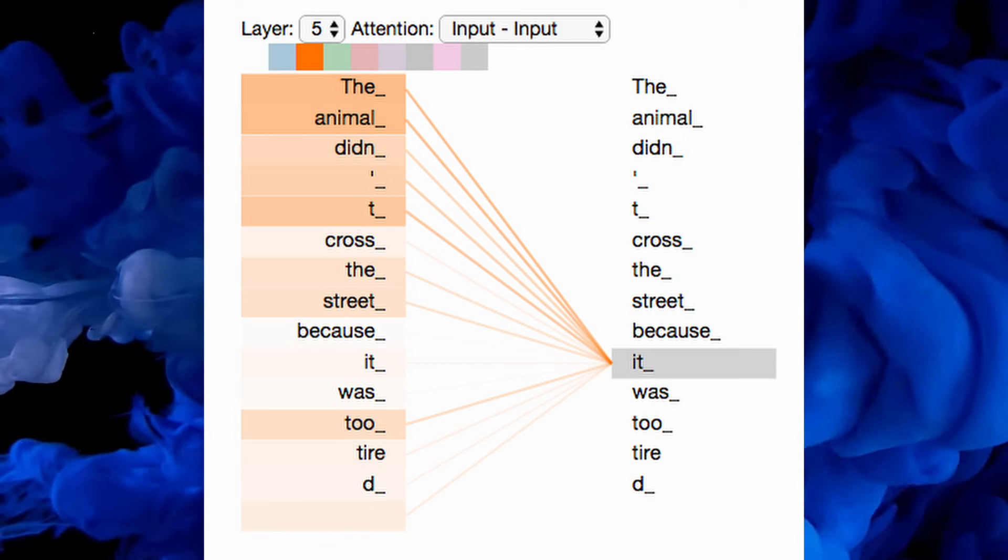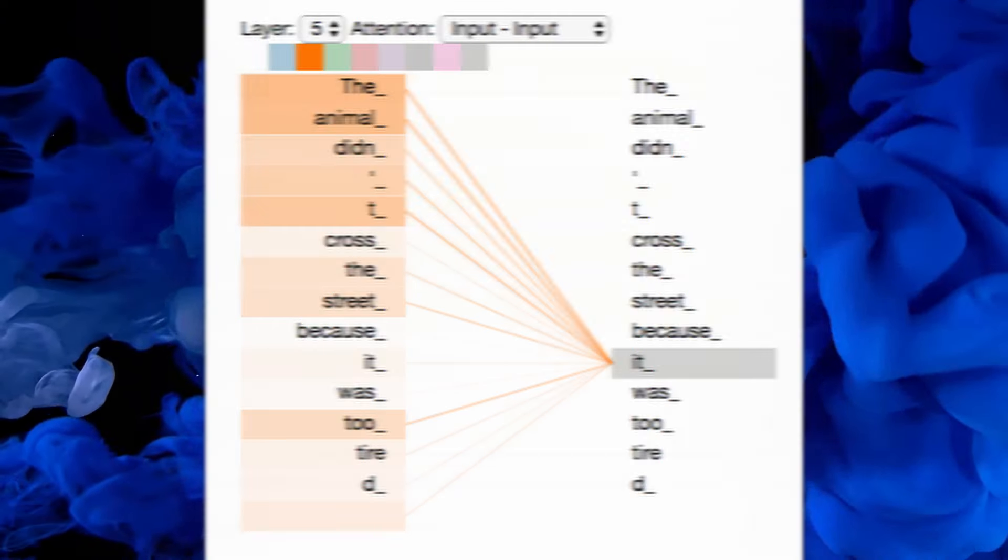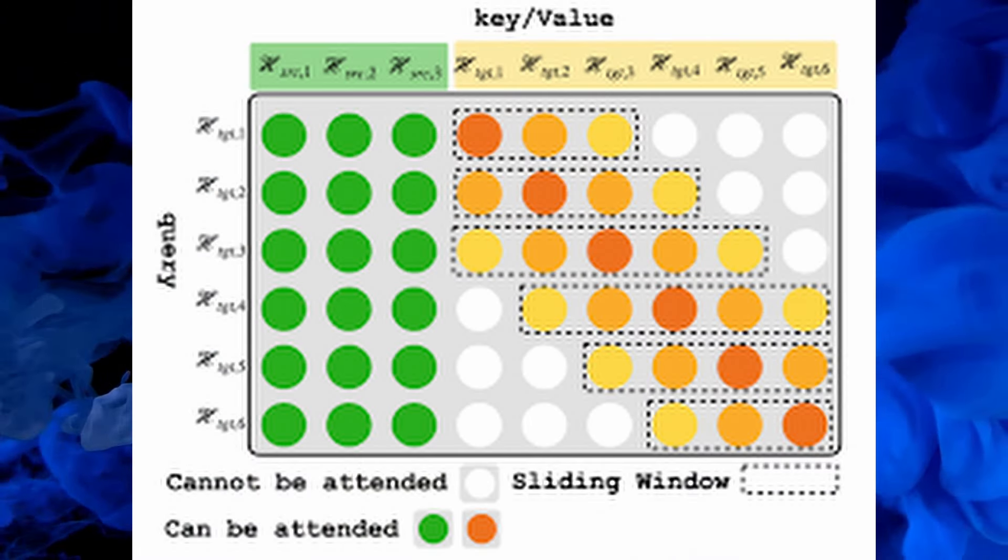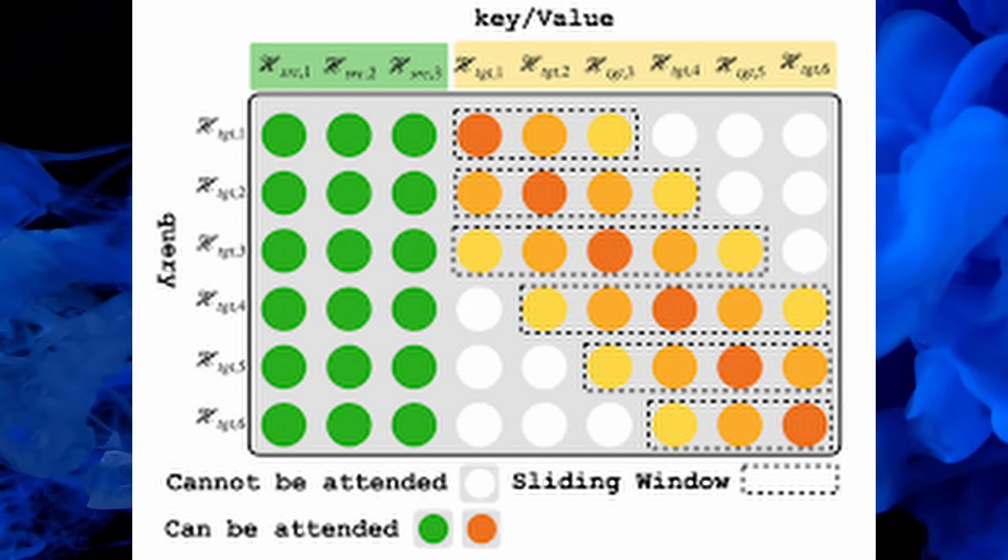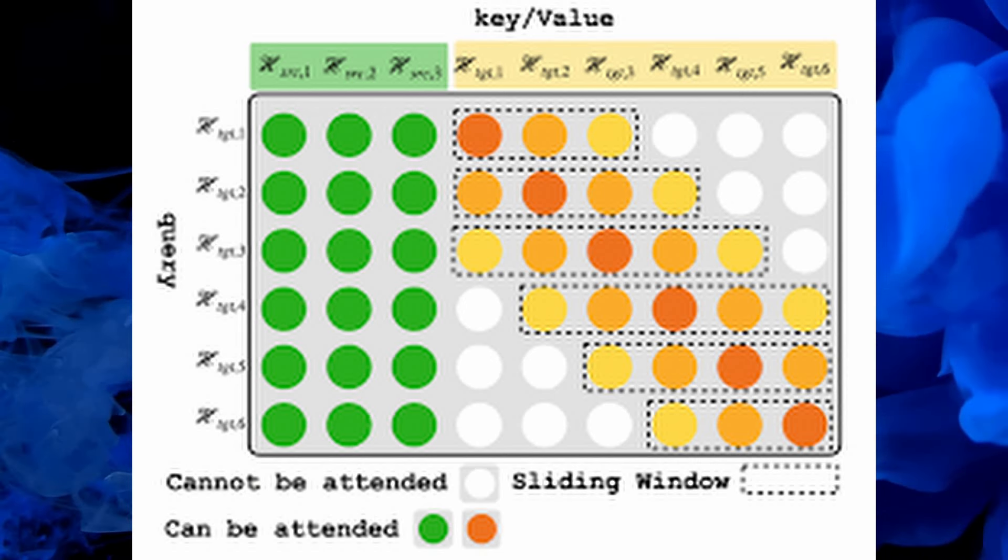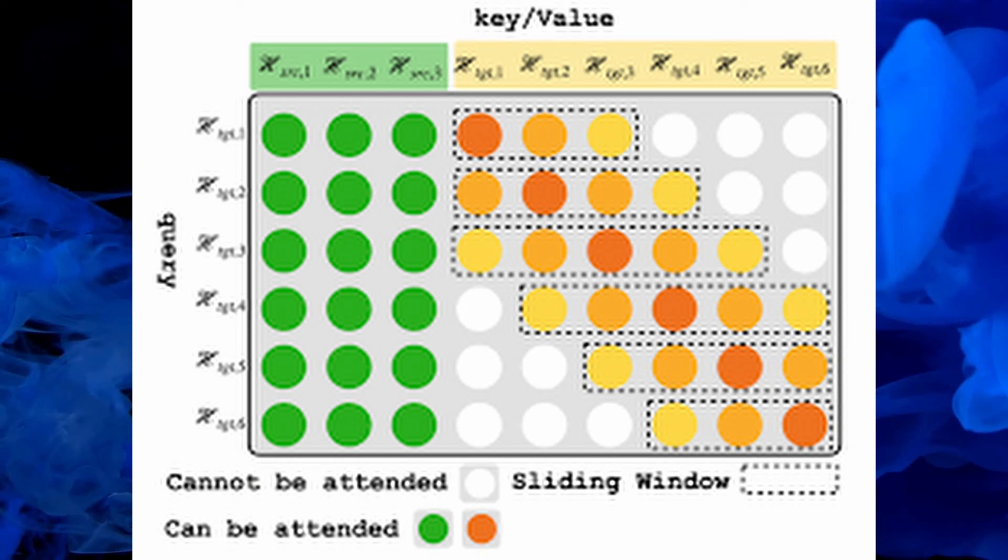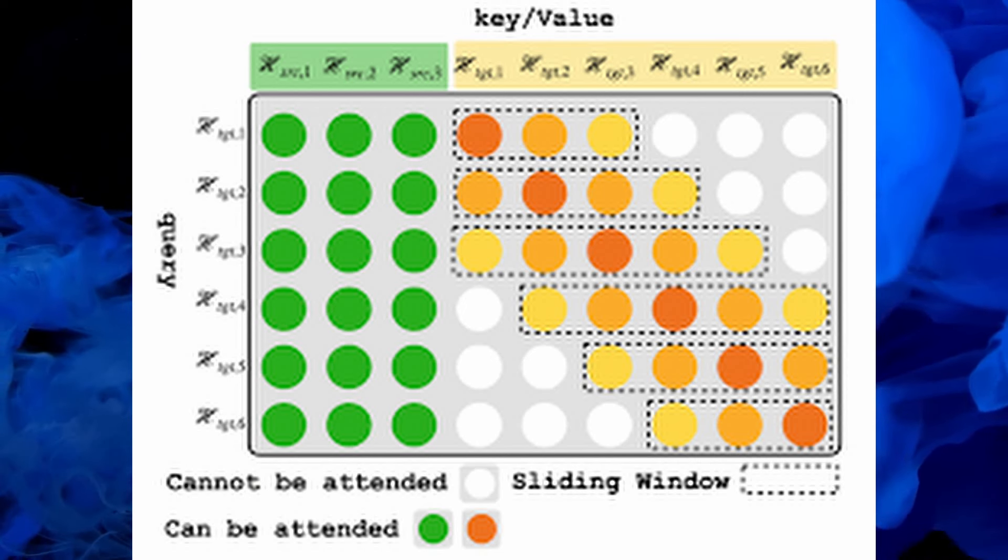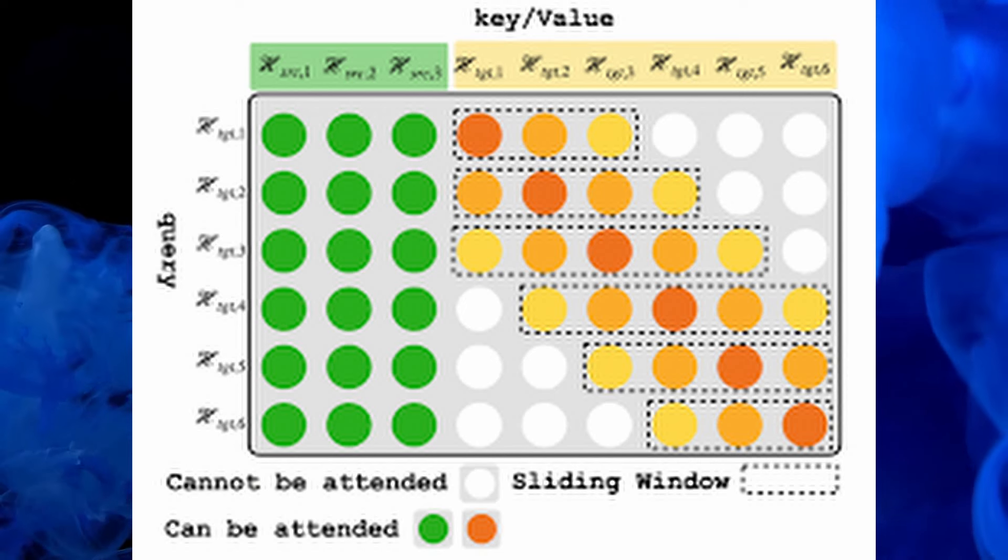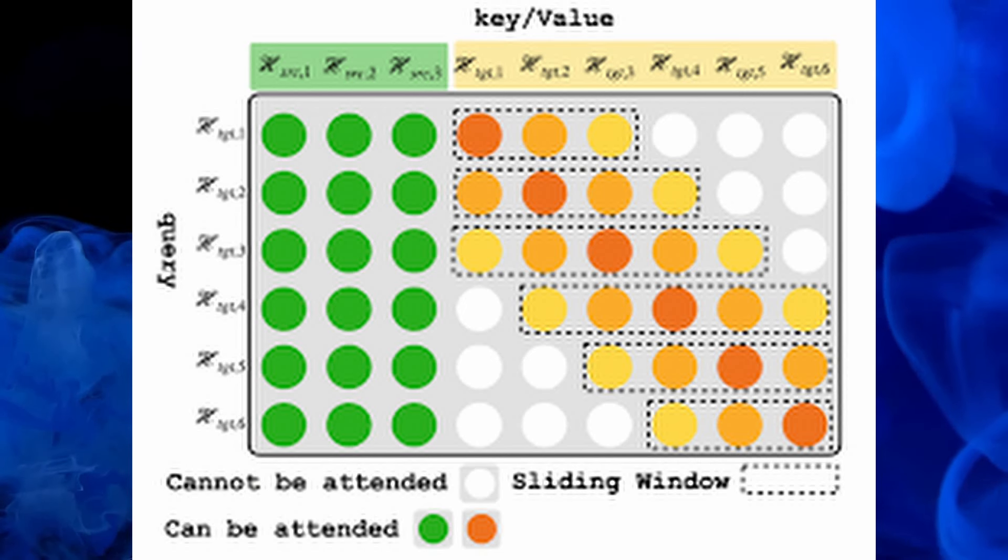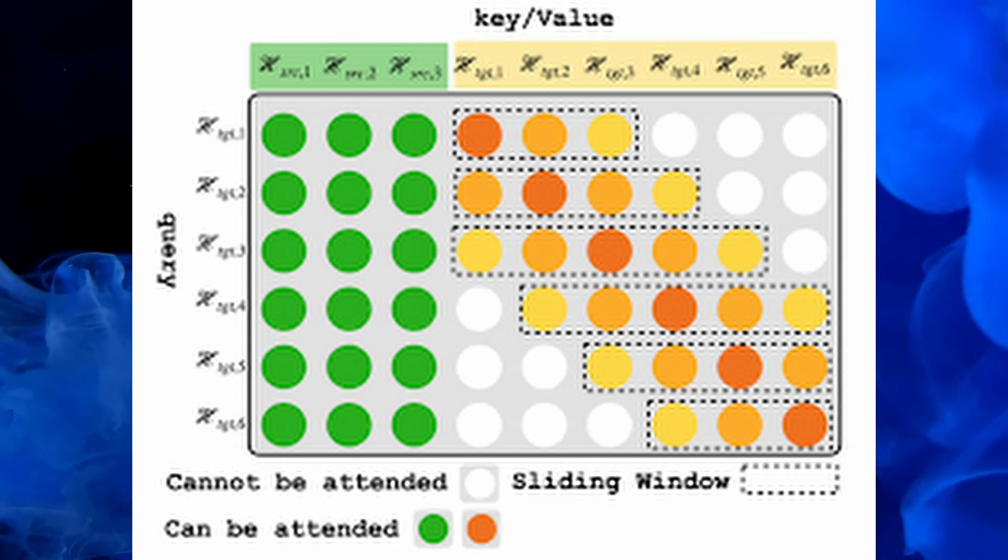Do sliding window attention in transformer networks have vanishing gradient problems? To answer simply, sliding window attention in transformers is designed to mitigate the vanishing gradient problem by constraining the scope of attention within each window. This approach limits the paths through which gradients must propagate, reducing the likelihood of vanishing gradients compared to full sequence attention mechanisms.